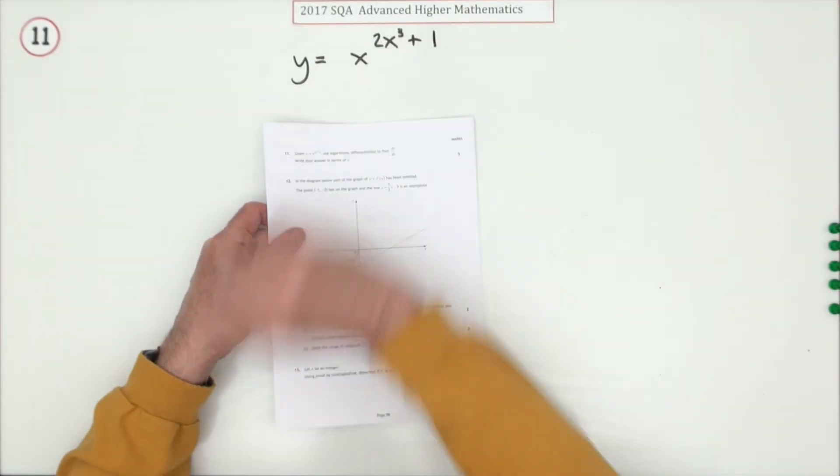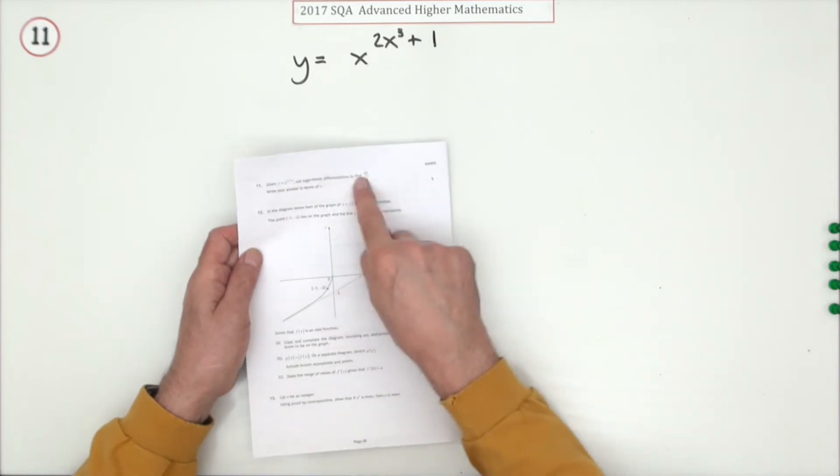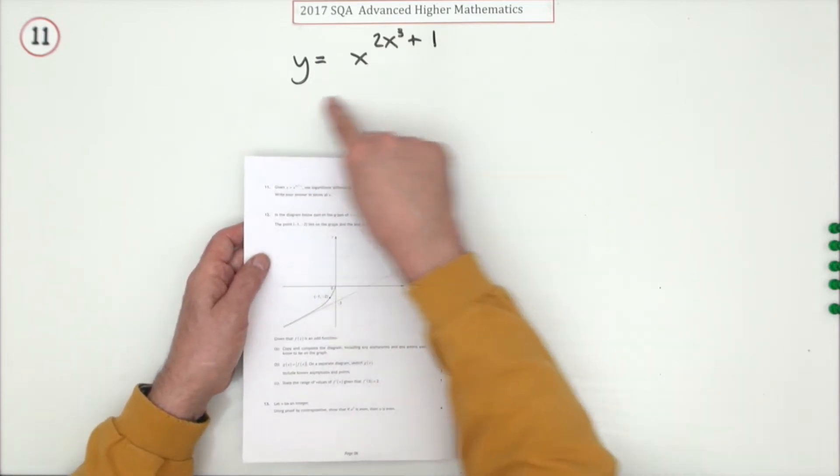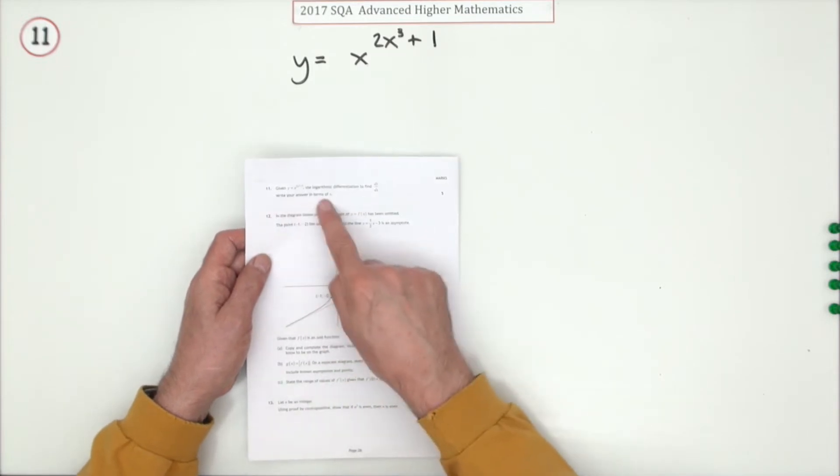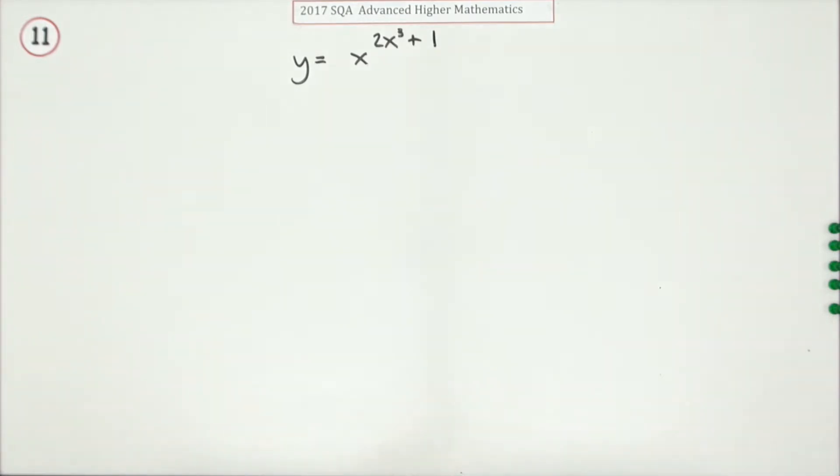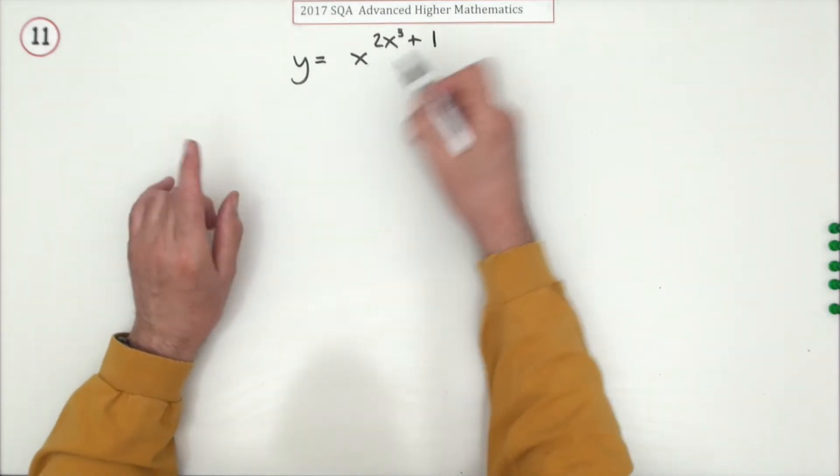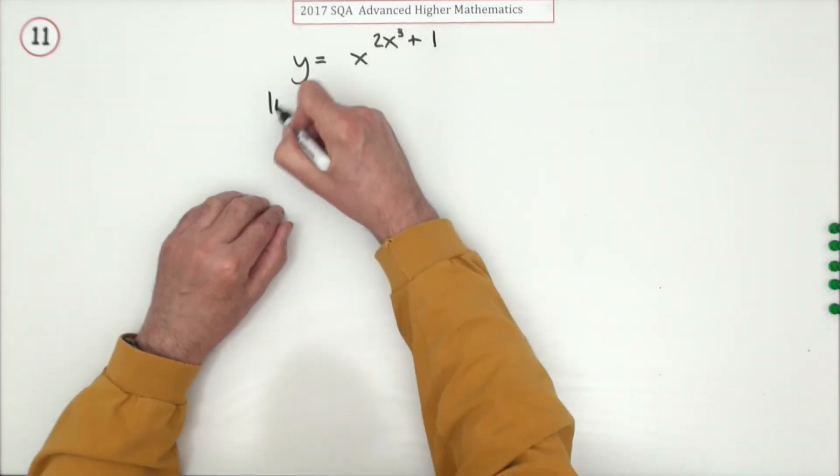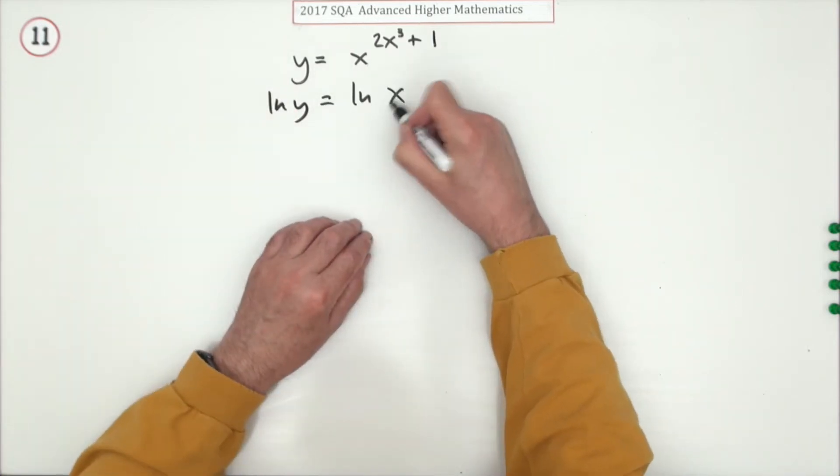Number 11 then, from the 2017 Advanced Higher Maths, five marks for it. It's a differentiation problem, but it says use logarithmic differentiation to get the derivative of this. Write your answer in terms of x. Well, you'd have used logarithmic differentiation anyway, so use logarithmic differentiation. Very well, take the logs of both sides.